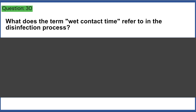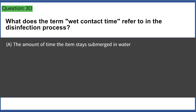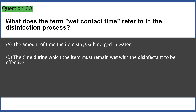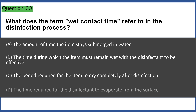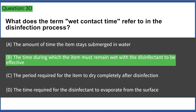What does the term 'wet contact time' refer to in the disinfection process? a) the amount of time the item stays submerged in water, b) the time during which the item must remain wet with the disinfectant to be effective, c) the period required for the item to dry completely after disinfection, d) the time required for the disinfectant to evaporate from the surface. Answer: B, the time during which the item must remain wet with the disinfectant to be effective.